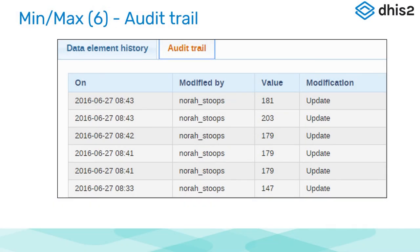The other thing found on the data information window is an audit trail. Every time somebody changes the value, it keeps track of it, so you can see when values were changed and updated and who did that.